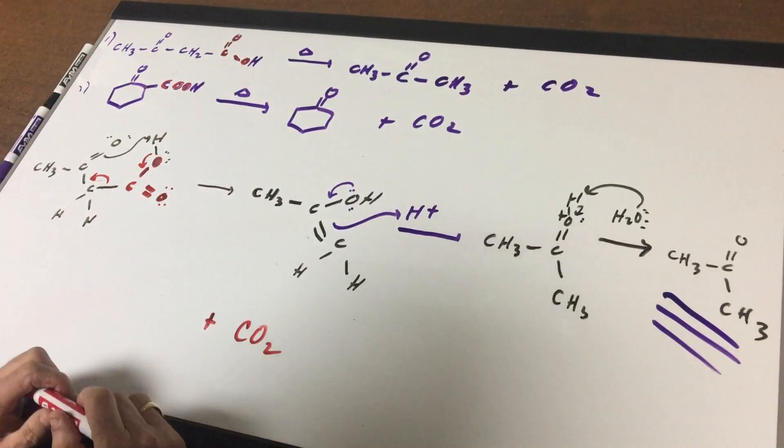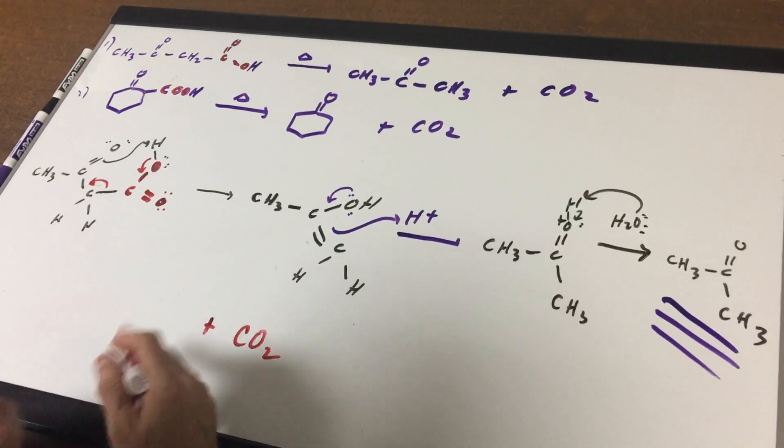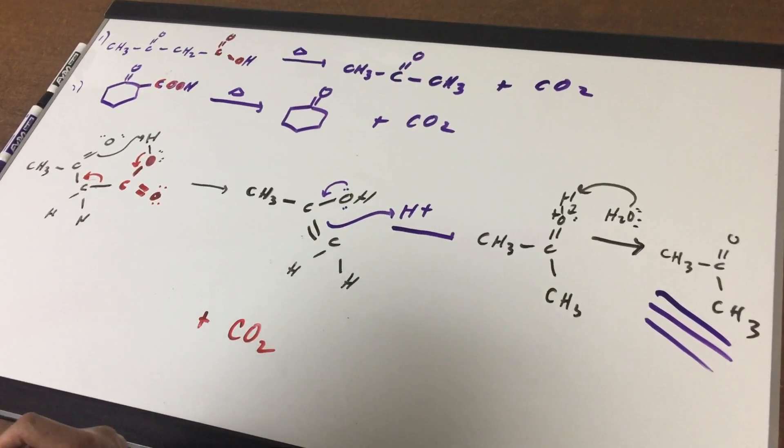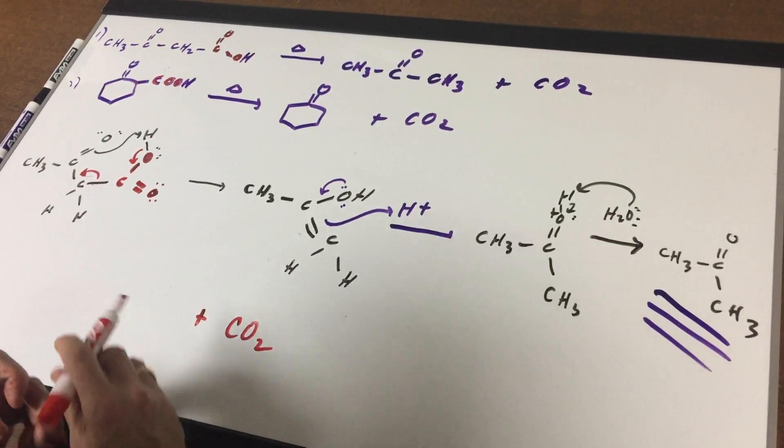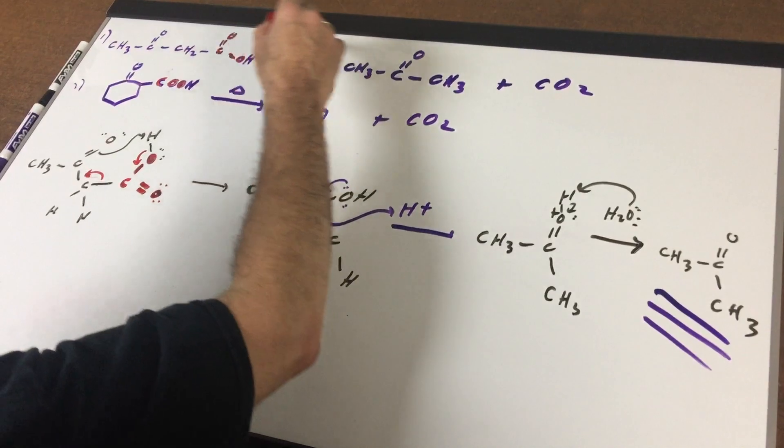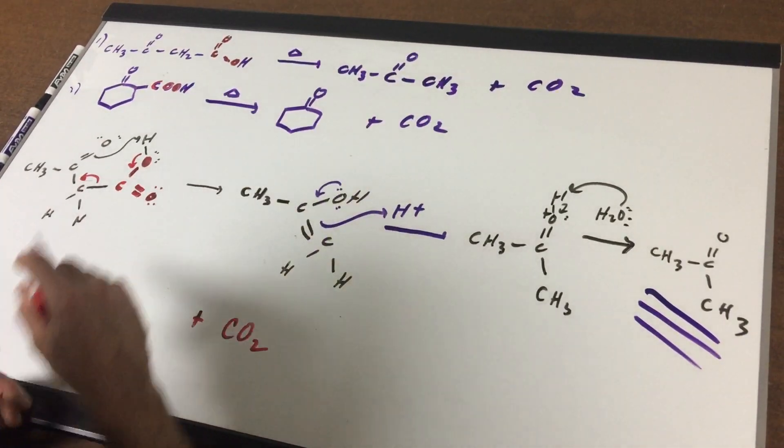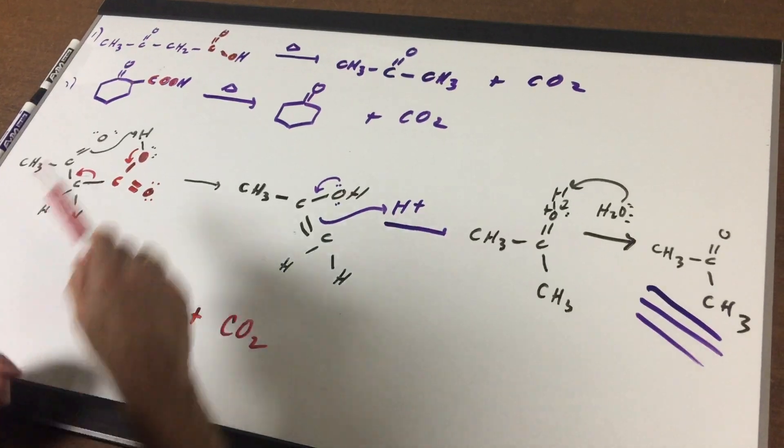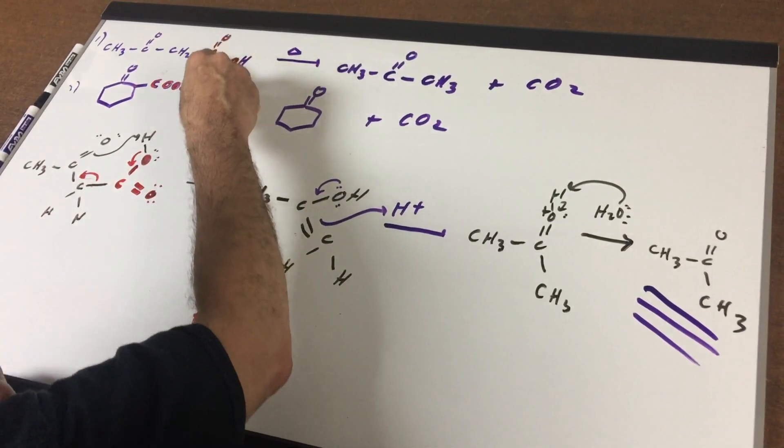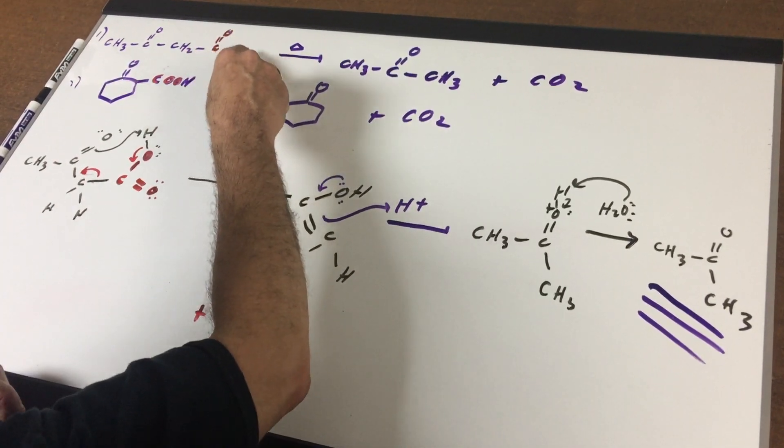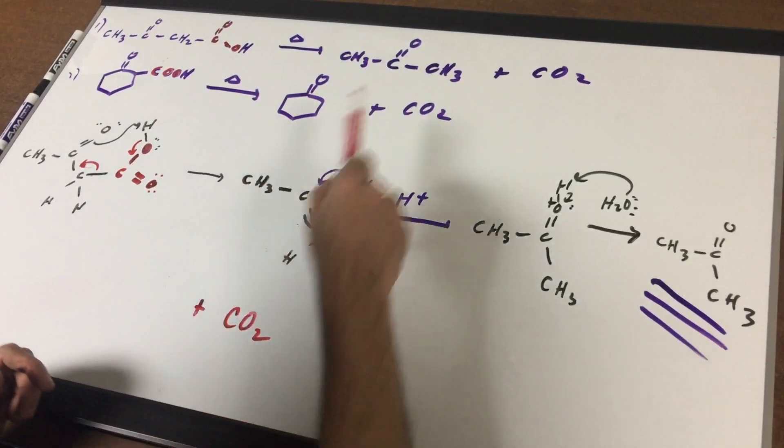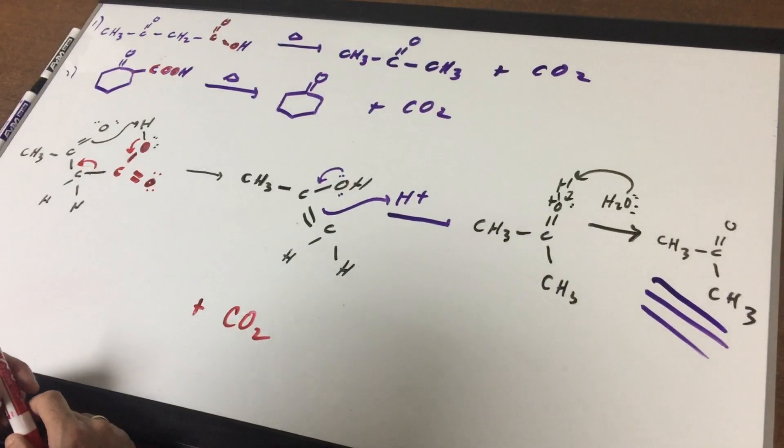So whenever you have a beta keto acid they are notorious for decarboxylating when heated, meaning that you're gonna lose the CO2. So what I did in this example is to predict the products. I put in red you can almost see the CO2, so all you would do is envision getting rid of the CO2 and then you just leave behind that H and you put it where the CH2 group is, and that will give you these two products.